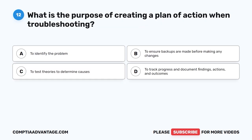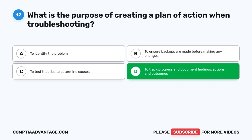Question 12. What is the purpose of creating a plan of action when troubleshooting? A. To identify the problem. B. To ensure backups are made before making any changes. C. To test theories to determine causes. D. To track progress and document findings, actions, and outcomes. The correct answer is D. To track progress and document findings, actions, and outcomes.